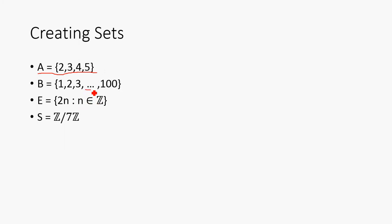We can also use ellipses to continue an obvious pattern, like {1,2,3,...,100}. We can use what's called set builder notation, which in this case, we let E equal {2n such that n is in the integers}. That's what this Z means right here. And this colon right here stands for such that. And then finally, we have another way we can do this: S equals Z mod 7, or the integers modulo 7.